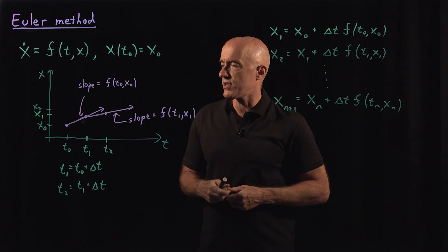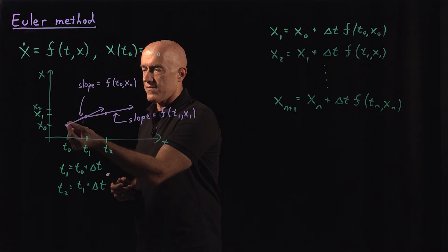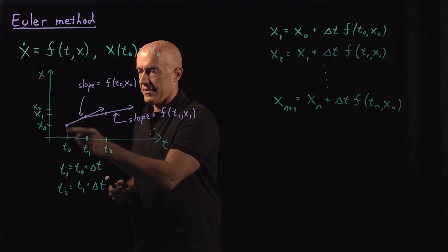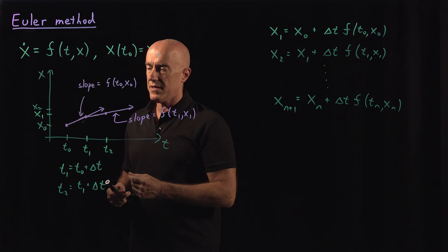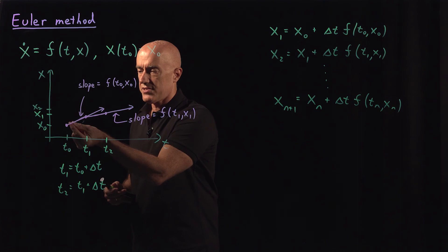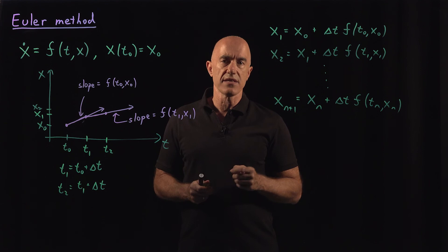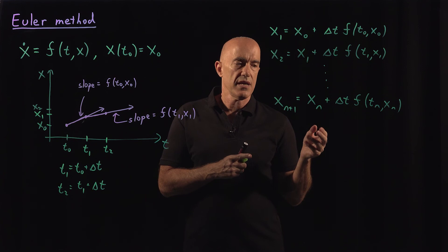There's some error in this method. You can see what the error is here. We're taking the value of the slope at t naught, x naught. But the slope actually changes along this line segment. So we're just taking the value at the initial point, and not considering that it might change along this line segment. Because we do it that way, this method is not considered very accurate. It's called a first order method.